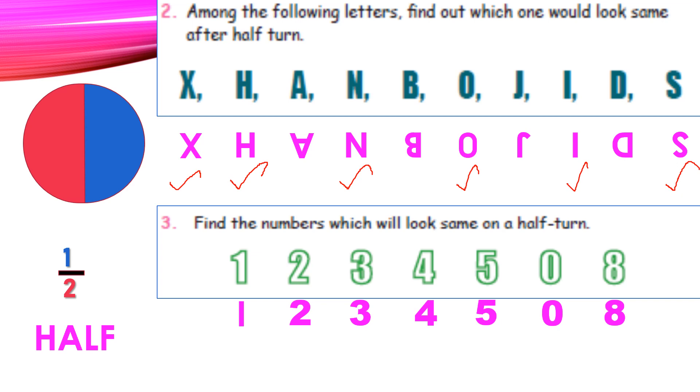Now come to the third question. Find the numbers which will look same on a half turn. So here also, the same half turn only. 1 is given as a typed form, but normally we write 1 like this only. Then 2, 3, 4, 5, 0 and 8. So we have to put a tick mark now. 1 also looking as the same. 2 is no. 3, no. 4, no. This is not 5. Finally, 0 and 8. So here, 1, 0, 8. These three are the correct answer.